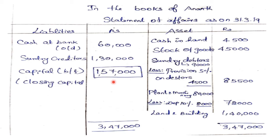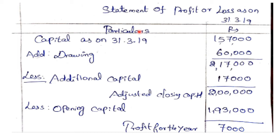Statement of Profit or Loss as on 31.3.19: closing capital 1,57,000 plus drawings 60,000 = 2,17,000, less additional capital introduced 70,000 (shown as 17,000 net adjustment) = adjusted closing capital 2,00,000. Less opening capital 1,93,000. Profit for the year = 7,000.